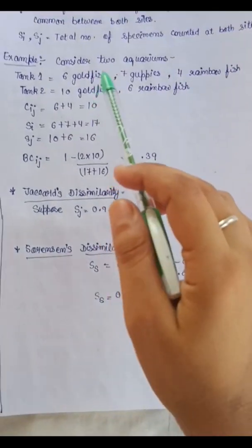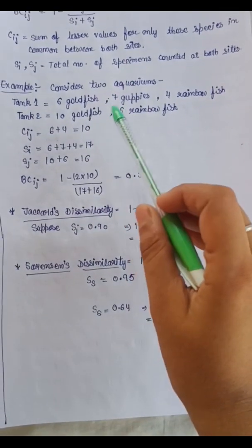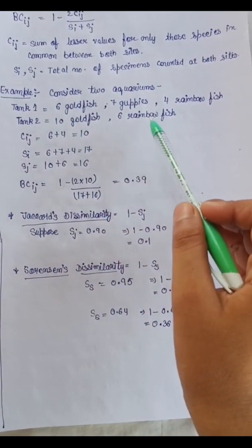Example: Consider two aquariums. Tank 1 has 6 goldfish, 7 guppies, and 4 rainbow fish. Tank 2 has 10 goldfish and 6 rainbow fish.